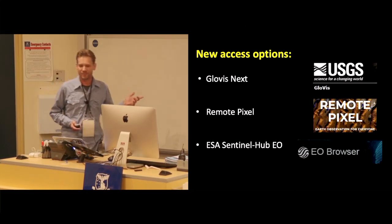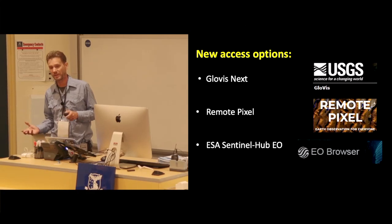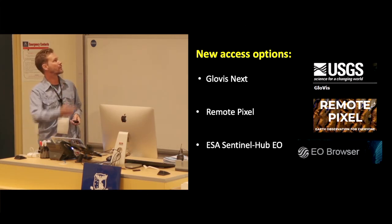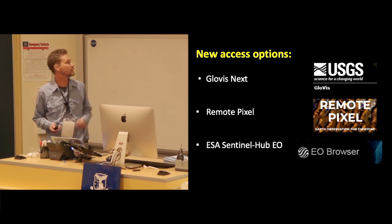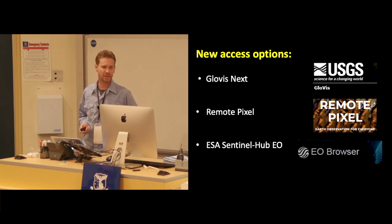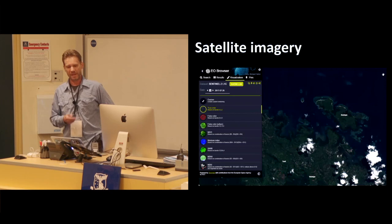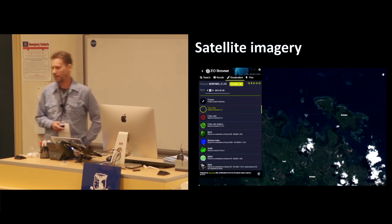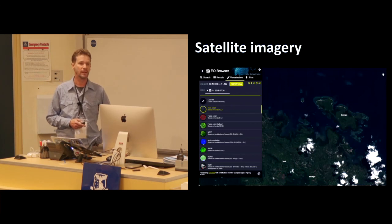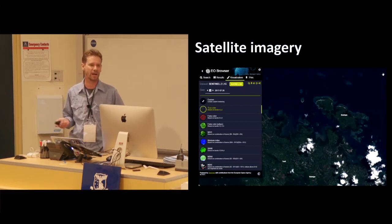The other revolution I've seen in remote sensing is the accessibility of these datasets. When I started working in the remote sensing field 25 years ago I was still getting those big tapes that we'd have to plug into big machines and take an hour to download imagery. Now we've got incredible sites — Glove, Remote Pixel, and recently launched ESA's Sentinel Hub — which has really revolutionised access to these incredible datasets. The ESA Earth Explorer Hub lets you access in near real time every five days this 10-metre resolution Sentinel-2 data.